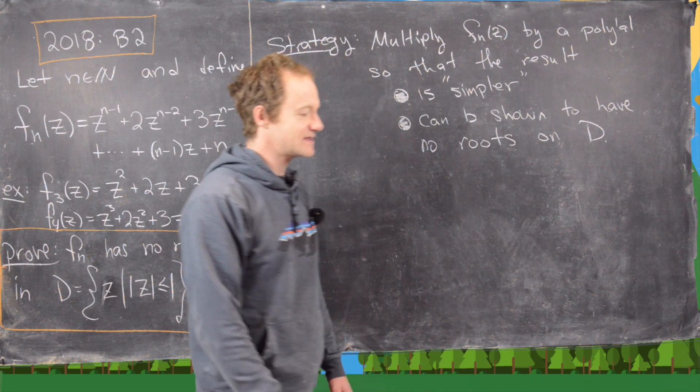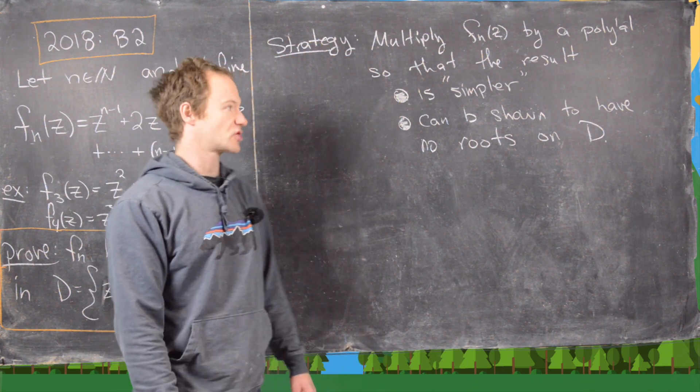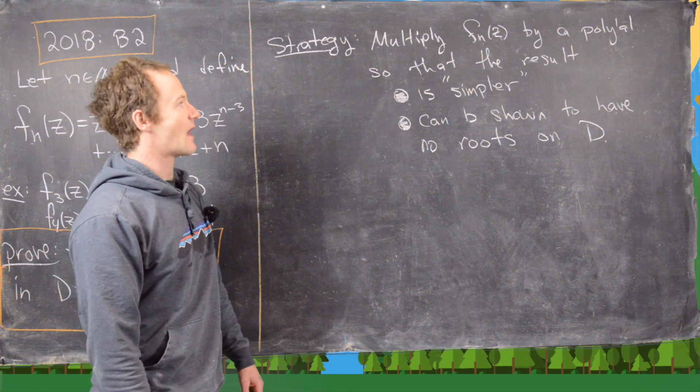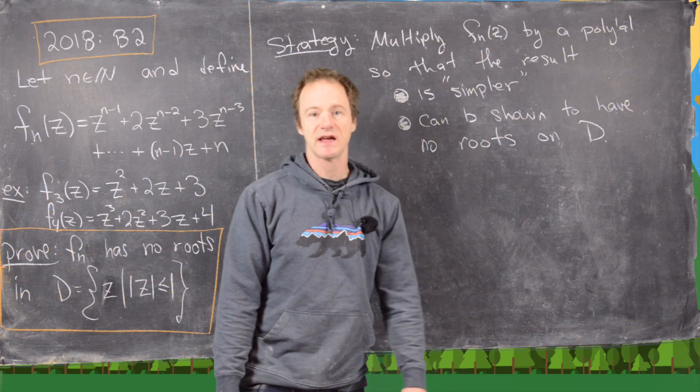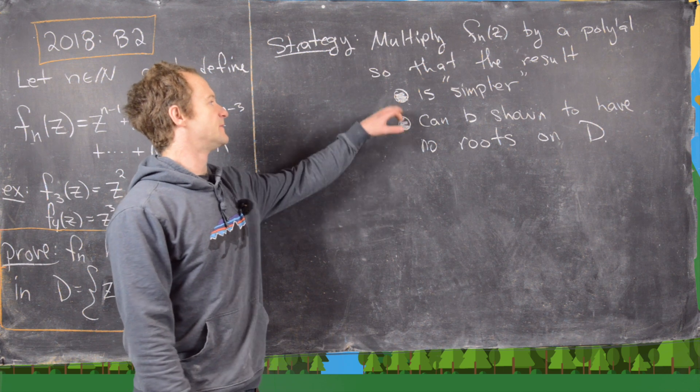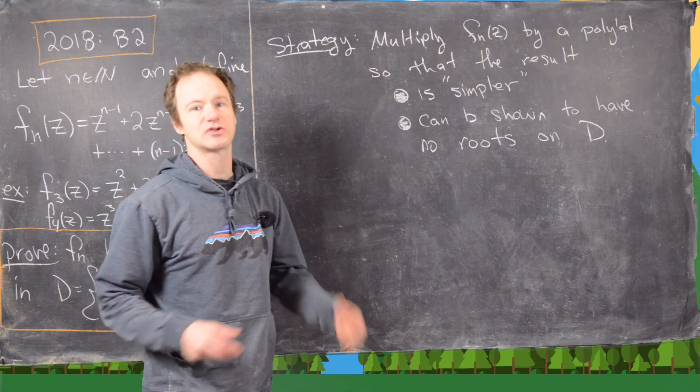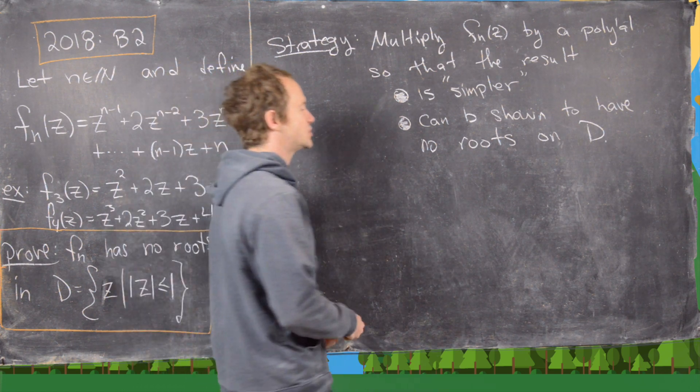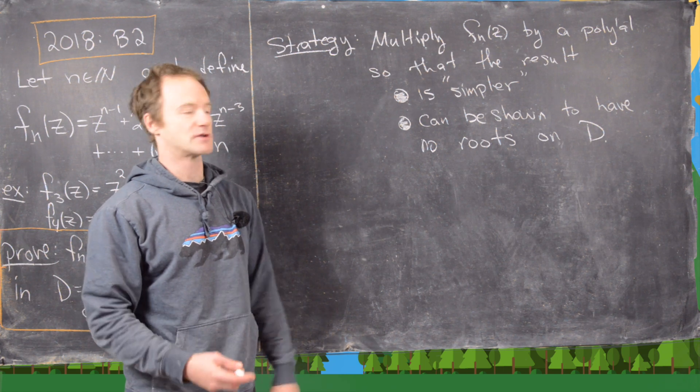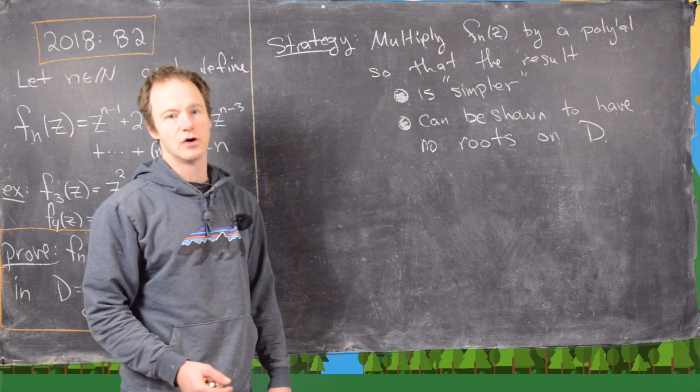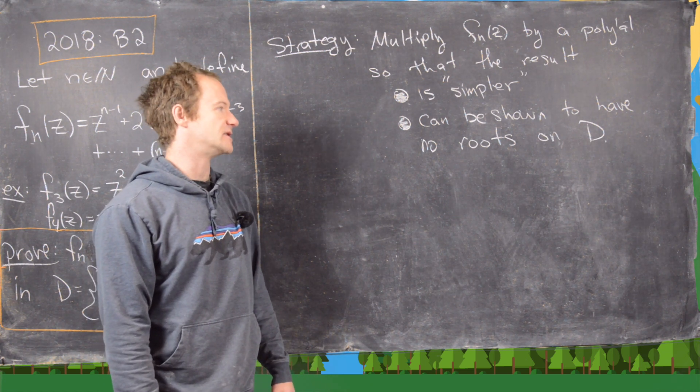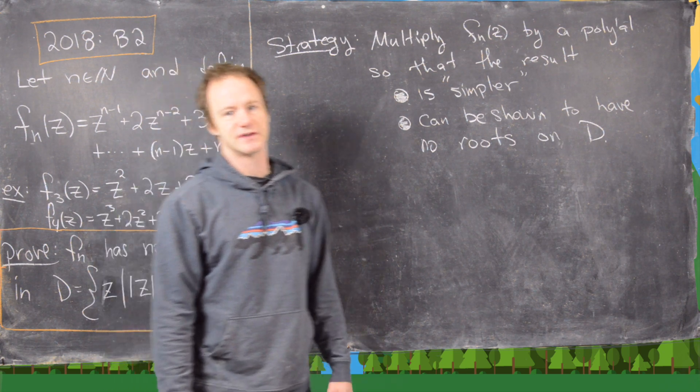This is actually a pretty quick solution once you see the trick, so I want to motivate the trick a little bit. We want to multiply this polynomial fn(z) by some other polynomial that makes that resulting polynomial simpler to work with, and it can be shown to have no roots on that unit disk D. In other words, that resulting polynomial can be shown to have no roots on that disk D, or maybe the only roots that it has on D are obviously not roots of fn.